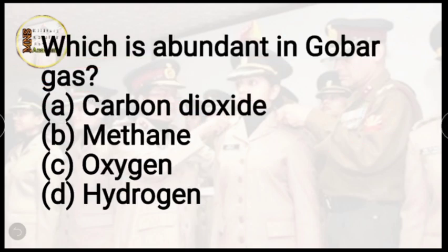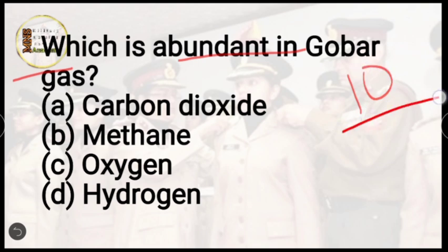Question number 10: which gas is most abundant in gober gas? Options are carbon dioxide, methane, oxygen, or hydrogen. The correct answer is methane, option B. Gober gas is also called biogas. It is mostly used in rural and village areas because animal dung is easily available there. It is used for electricity and cooking purposes.